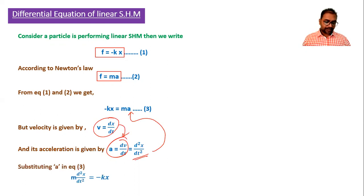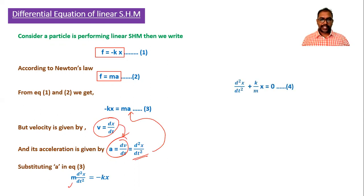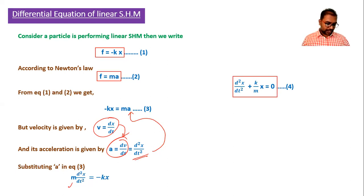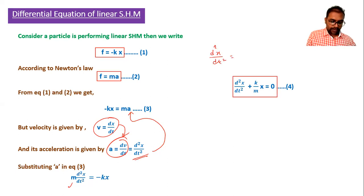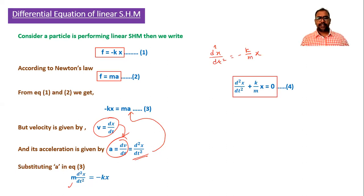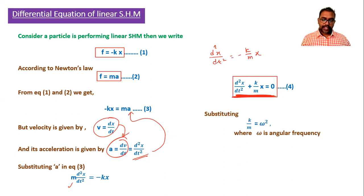Substituting this acceleration into the equation gives m·(d²x/dt²) = −kx. Shifting m to the other side: d²x/dt² = −(k/m)x. Rearranging, we get d²x/dt² + (k/m)x = 0. This is equation 4 — the differential equation of linear SHM in terms of the force constant k.